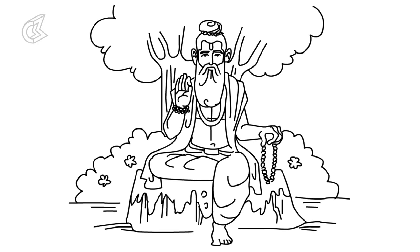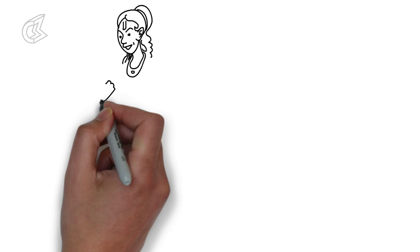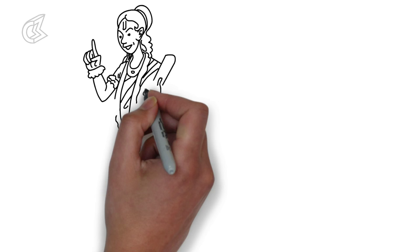Valmiki in his early life was a robber known as Ratnakar. He used to rob and kill people. One day he came across Narad, the son of Brahma, and tried to rob him.